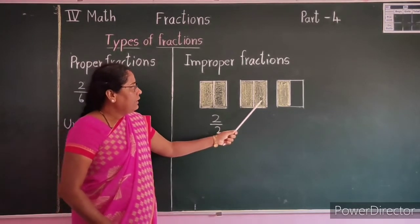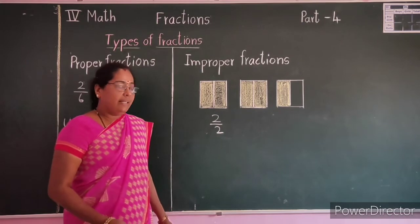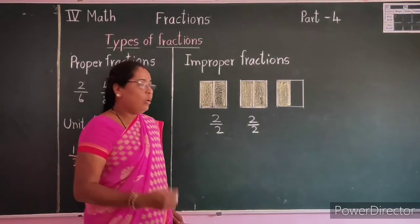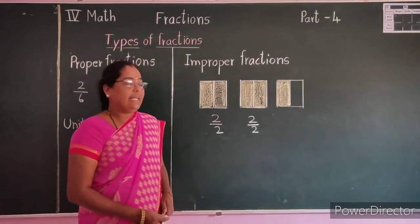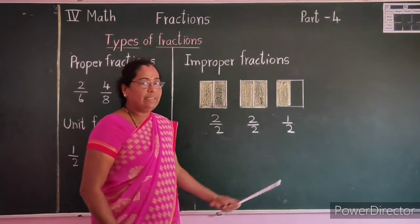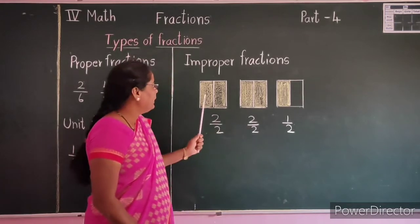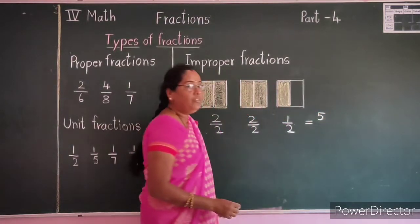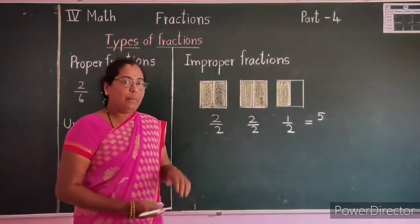See one more. Here also this square is equally divided into two equal parts — the fraction for this square is 2 by 2, which means 1. See one more — this square is equally divided into two parts and one part is shaded, so the fraction for this square is 1 by 2. If you add all these fractions, first count the number of shaded parts: 1, 2, 3, 4, 5. Total number of shaded parts is 5. The denominator remains the same — all the squares are equally divided into two parts.